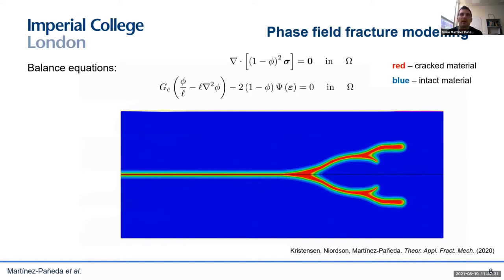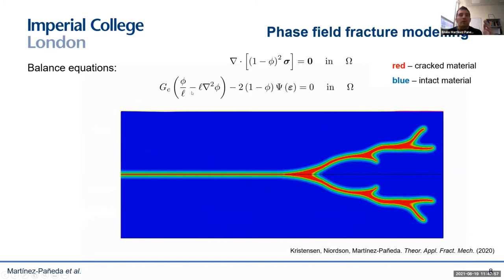At the end of the day, we have a model that is physically sound based on Griffith and the thermodynamics of fracture, and at the same time computationally very compelling. The balance equations include the balance of linear momentum — with the phase field degrading the stiffness — and the phase field evolution, representing a competition between the strain energy density that increases with mechanical straining and the toughness. By solving this simple system, we can predict in both 2D and 3D very complex cracking patterns, such as branching, merging, and initiation from arbitrary sites, without convergence issues or the need for remeshing.